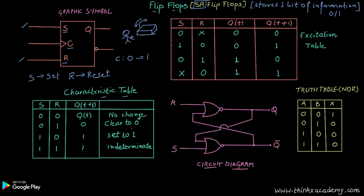Qt+1 represents the state of the flip-flop after time t+1, meaning after a transition. Q represents what the flip-flop is actually storing. If the flip-flop is maintaining a state of one, that means it is storing one. Qt+1 is the transition stage, and transition basically means the clock transitioning from zero to one.